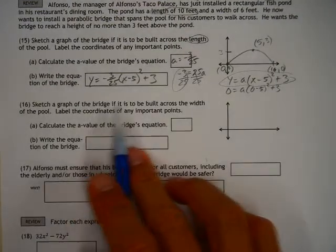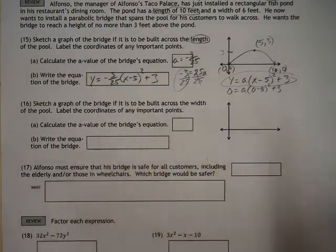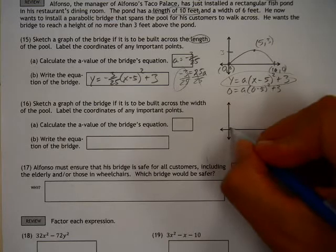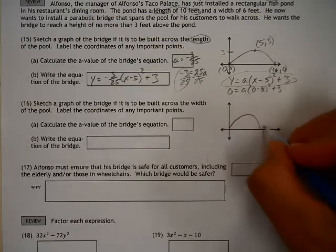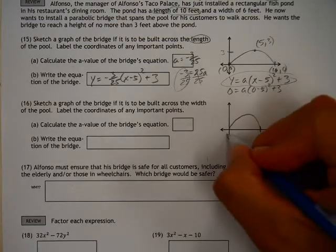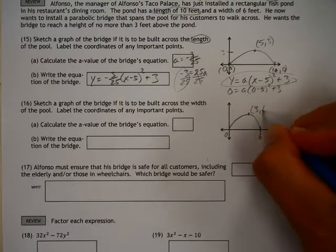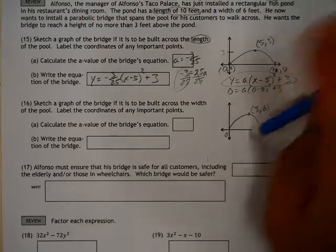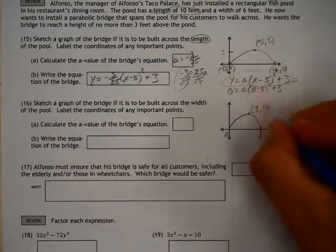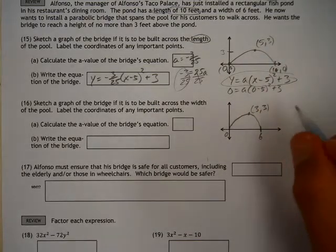Sketch a graph of the bridge. It's going to be built across the width of the pool. Okay. The only difference here is that it's going to be smaller because this only goes to 6. That's 0. It's a whole bunch of the same stuff again. This is going to be 3, 3. And, everything else kind of falls in place.